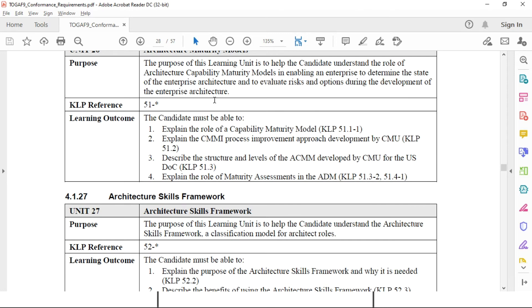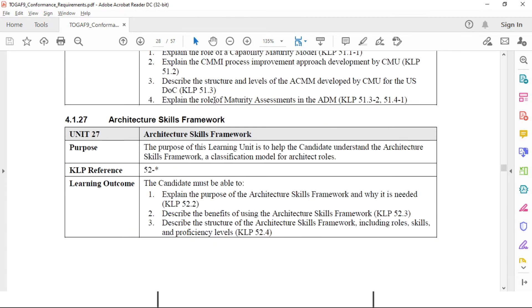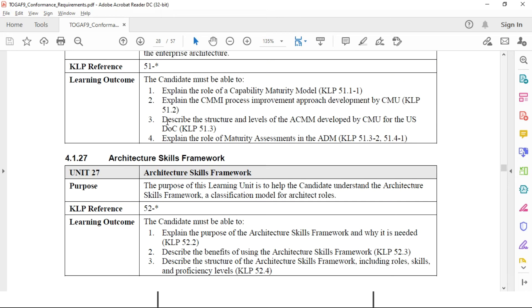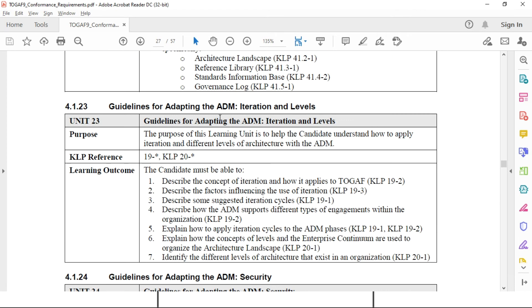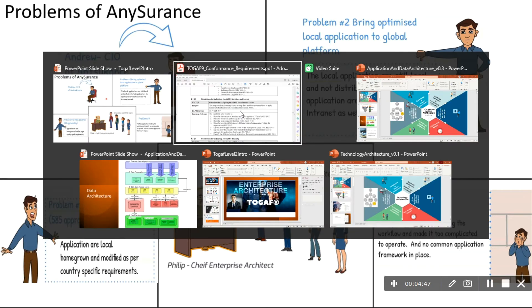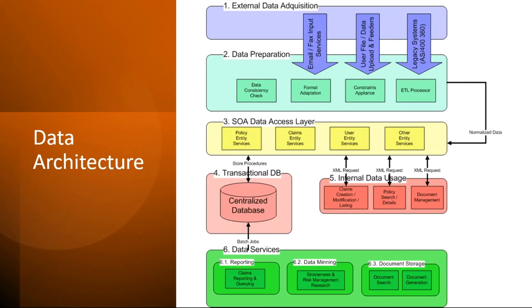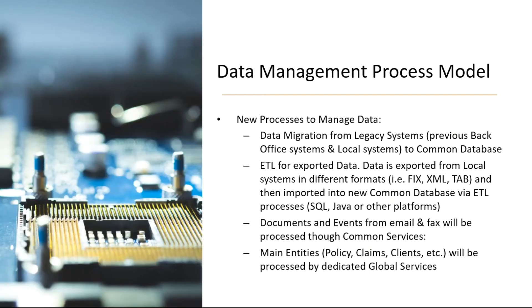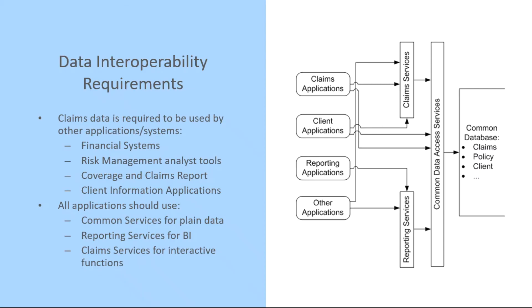It is a huge syllabus where you really need to apply what you have been learning in Level 1. It does not make sense to just look into a viewpoint in isolation. So what I thought was to apply those through a particular use case and show you at least one level of iteration to solve that problem. For example, if you want to do a data architecture, if I don't show you what you are going to do in the data architecture phase, it does not make sense.